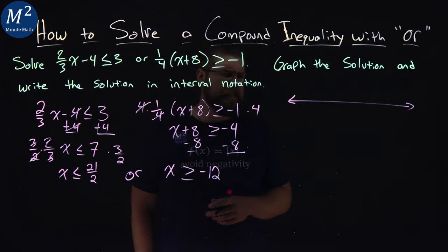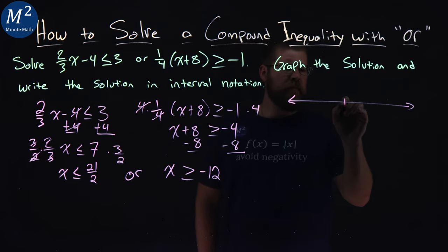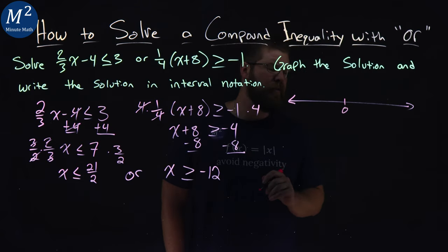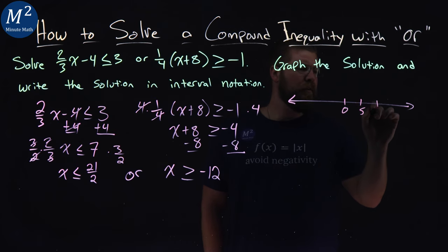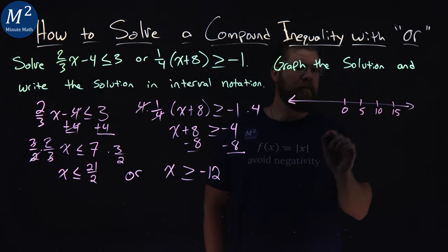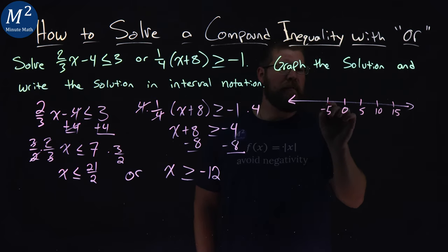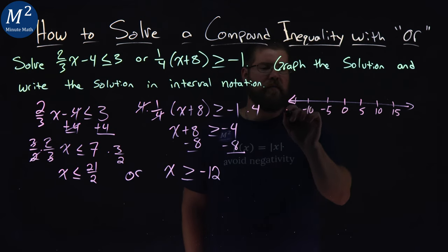We'll go from negative 12 to 21 over 2, which is 10.5. We have 0, and then let's go by 5: 5, 10, 15, and then negative 5, negative 10, negative 15.